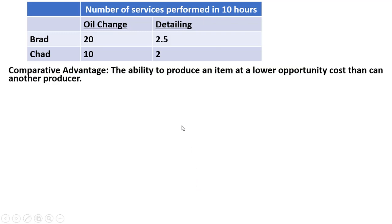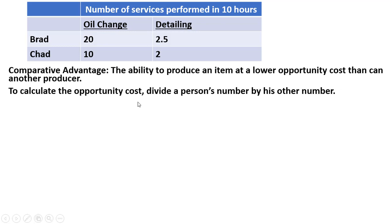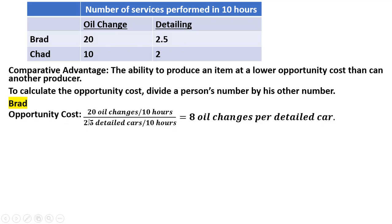Now let's look at comparative advantage — that's the ability to produce an item at a lower opportunity cost than another producer. To calculate the opportunity cost, we're just going to divide a person's number by his other number. For Brad, let's take 20 oil changes in 10 hours and divide that by 2.5 detailed cars in 10 hours. The 10 hours cancel, and you get 20 divided by 2.5, which is 8 oil changes per detailed car.